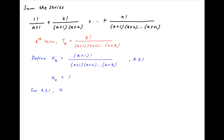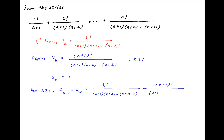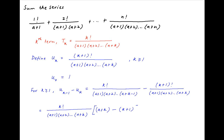Now notice that for k greater than or equal to 1, uk-1 minus uk is equal to k factorial divided by (a+1)(a+2)···(a+k-1) minus (k+1) factorial divided by (a+1)(a+2)···(a+k). Taking k factorial divided by (a+1)(a+2)···(a+k) as a common factor, we get inside the brackets (a+k) minus (k+1).